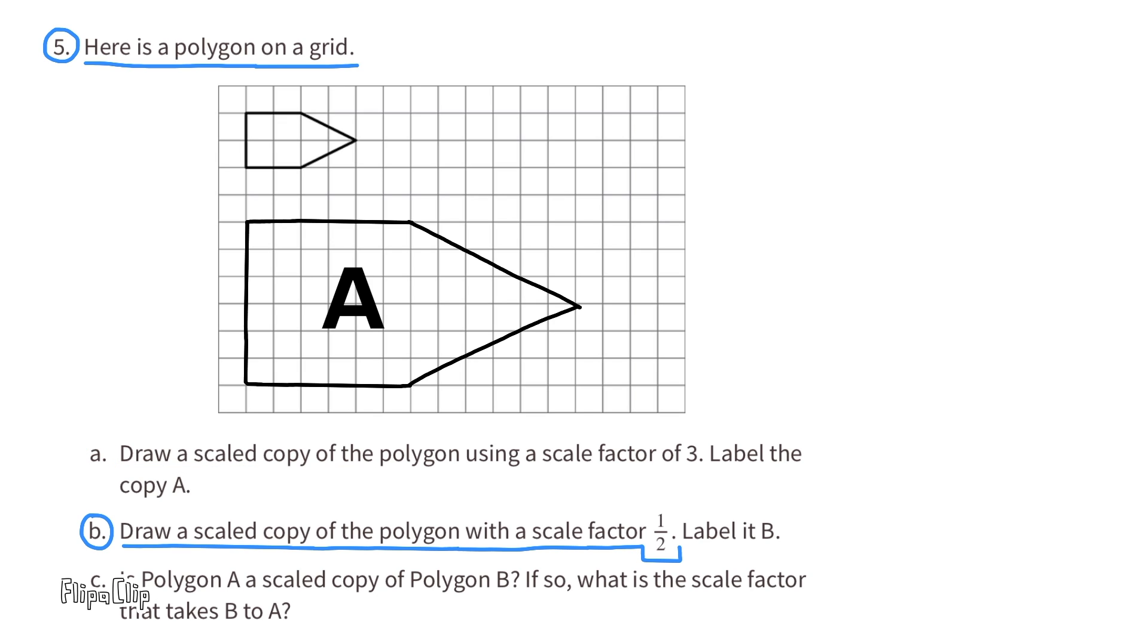B. Draw a scaled copy of the polygon with a scale factor of 1 half. Label it B. This time the side lengths of the scaled copy will be exactly 1 half the length of the original figure. Here's a look at the scaled copy with the scale factor of 1 half labeled B.